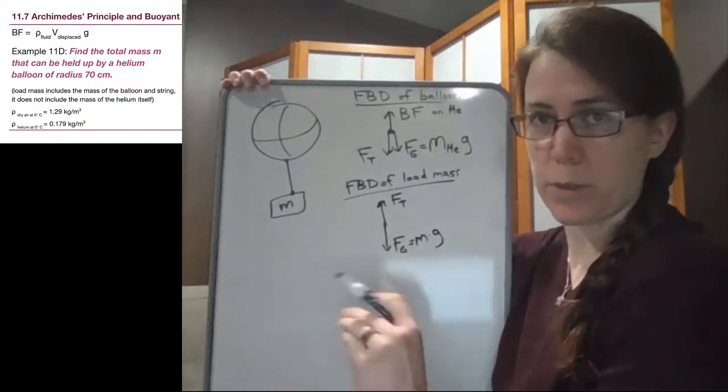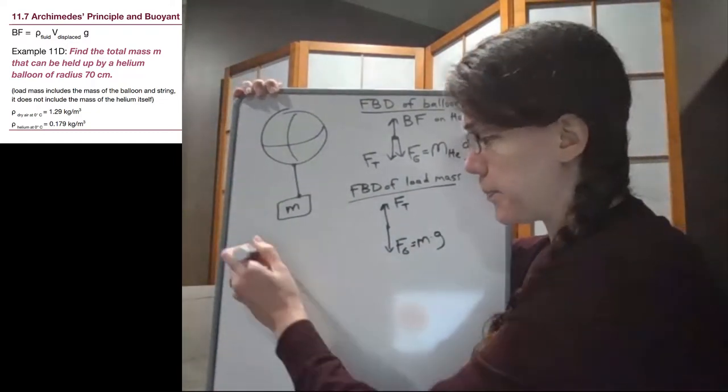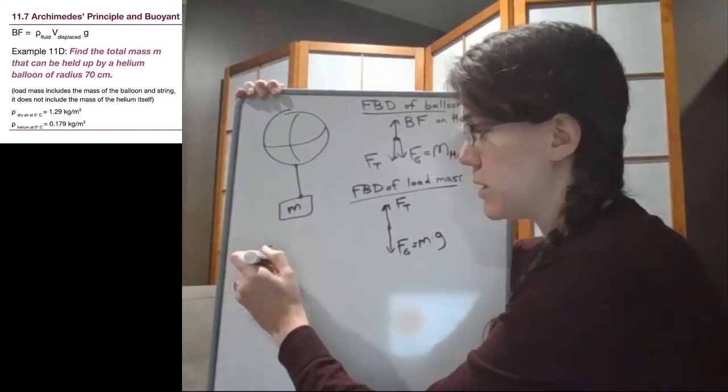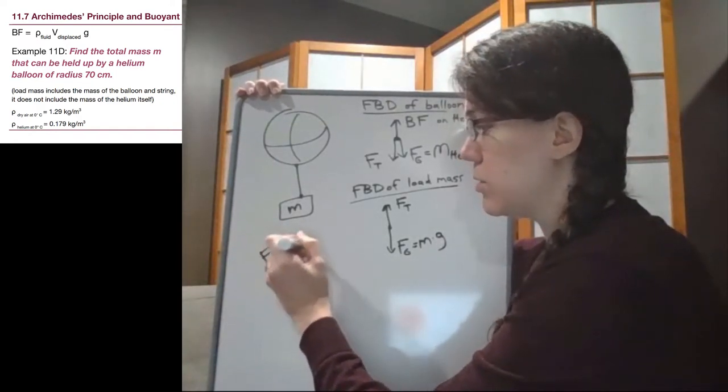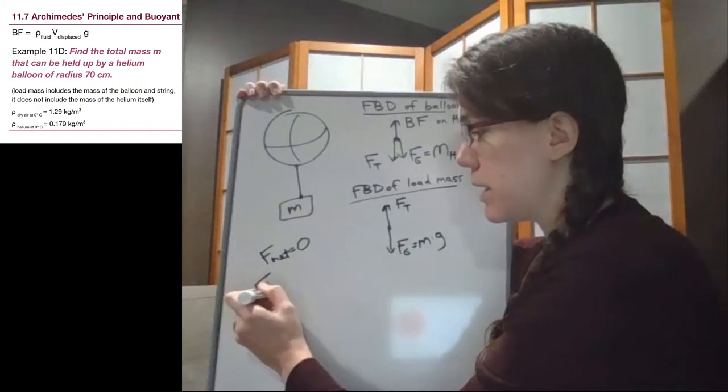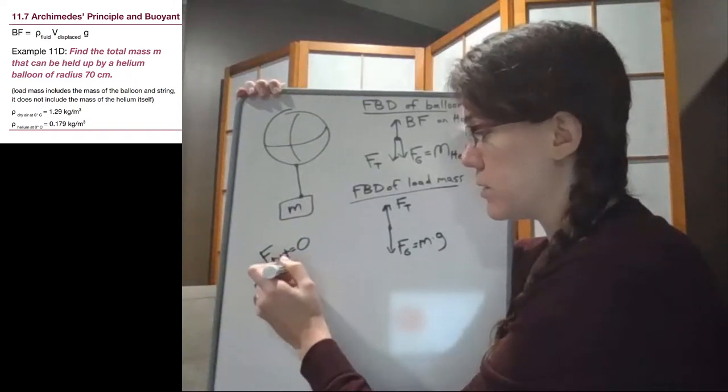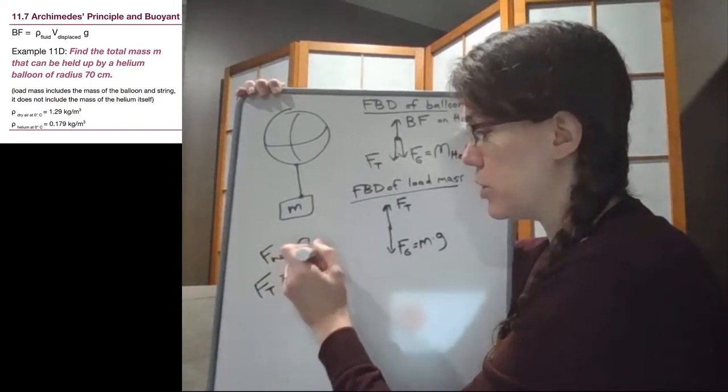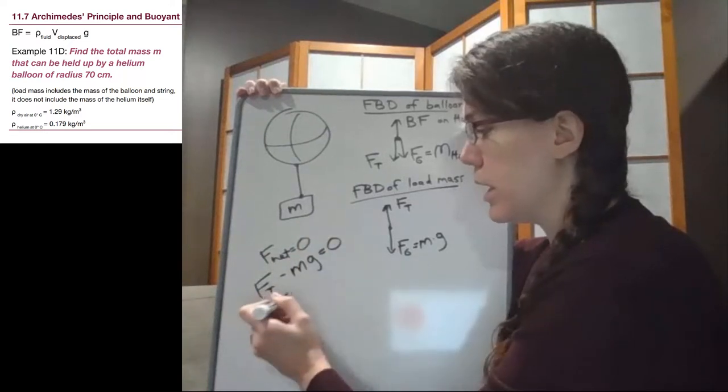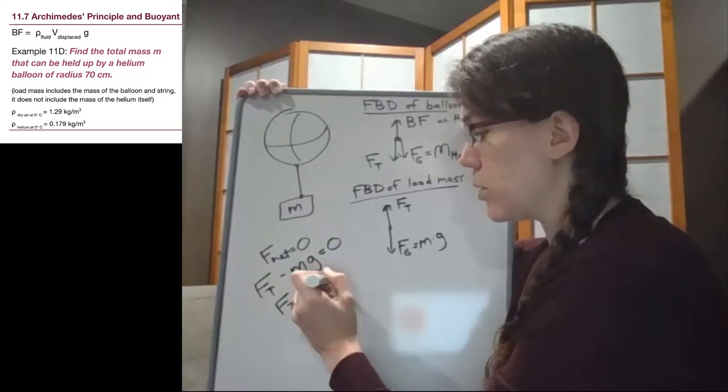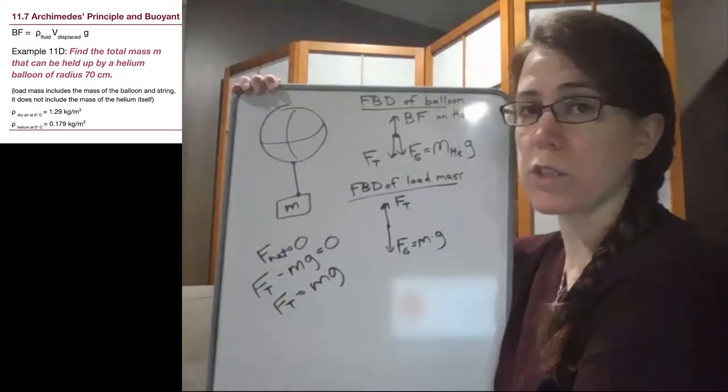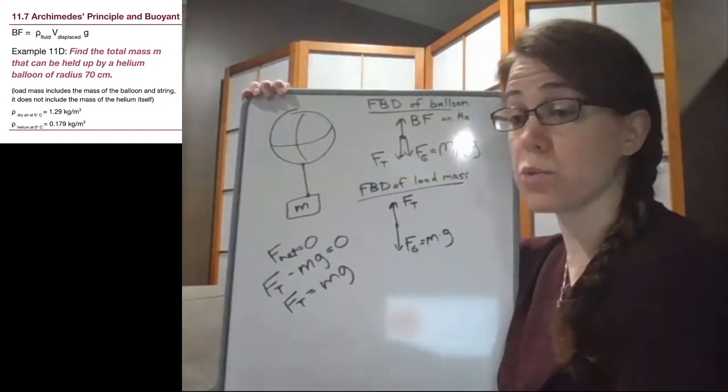Now in this problem this bottom free body diagram is simple to explain. In both cases here the net force equals zero, but that means that the tension here minus the load mass times g is equal to zero, and so the tension is going to equal the load mass.